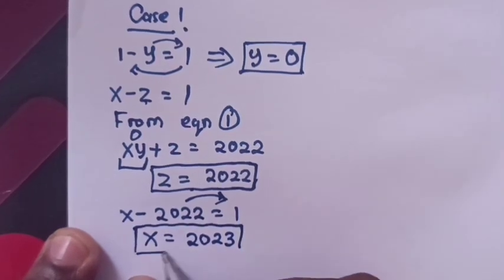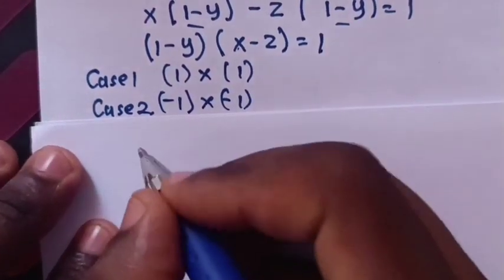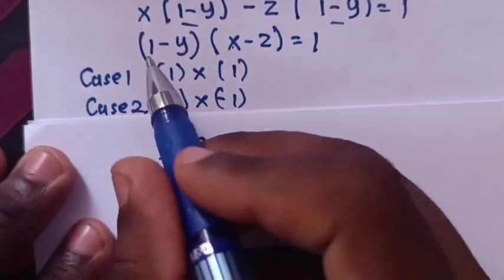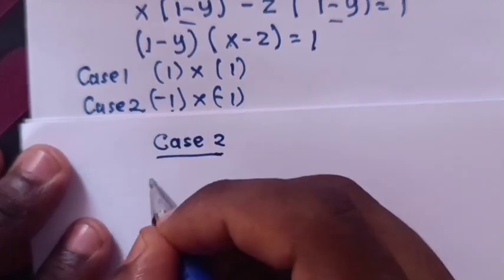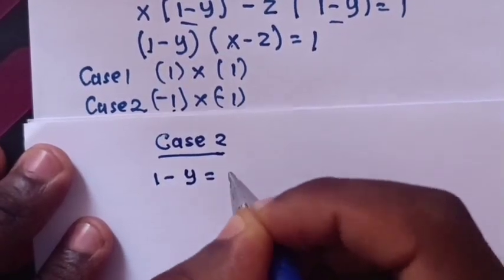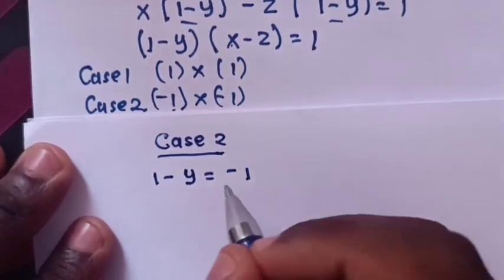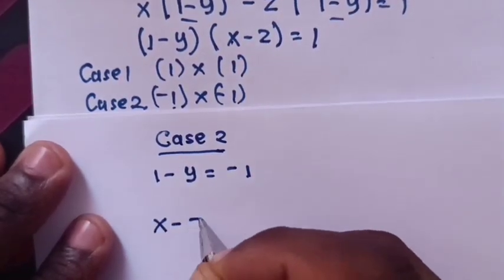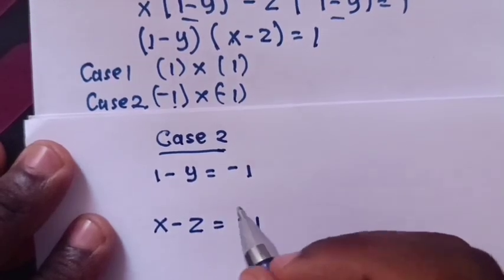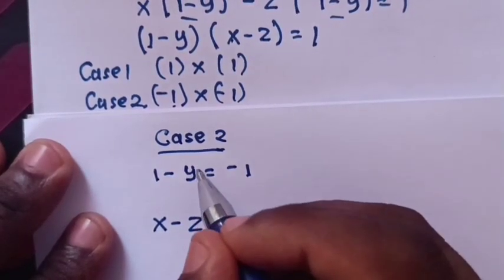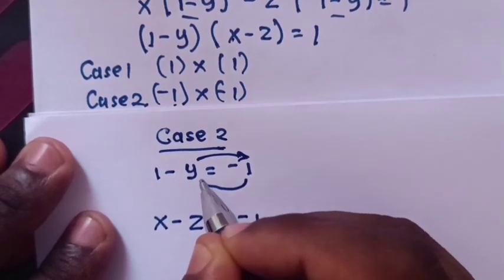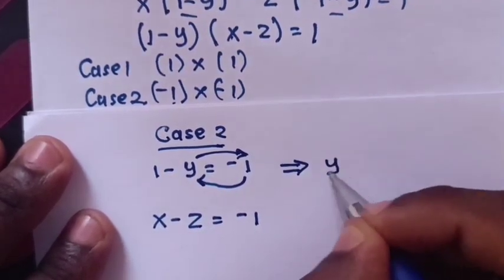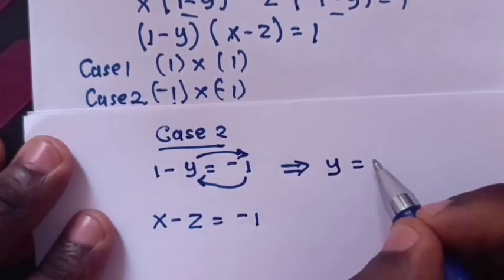Now in Case 2: (1 - y) = -1 and (x - z) = -1. To find y: taking y to the right side and -1 to the left gives y = 1 + 1 = 2.